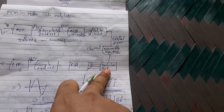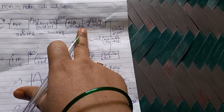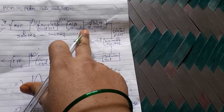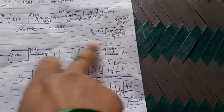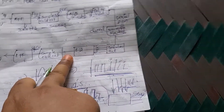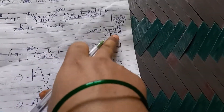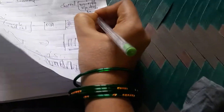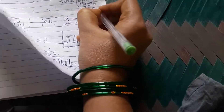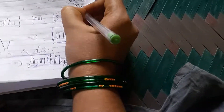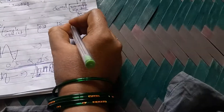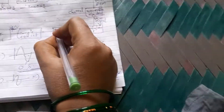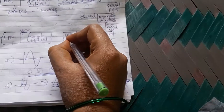On the receiver side, the reverse operation occurs. The serial PCM codes are given to the Serial to Parallel converter, which converts the serial information back into parallel format. The parallel PCM codes are then given to the D2A converter.